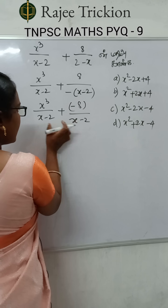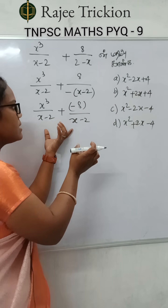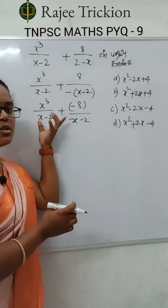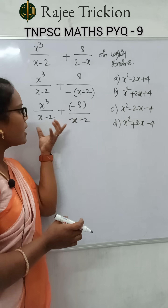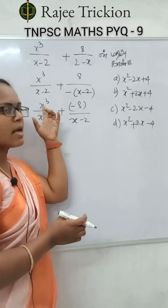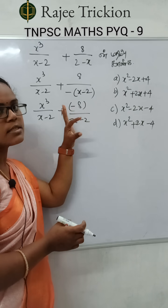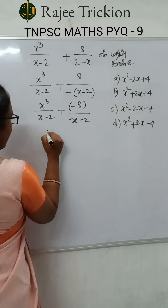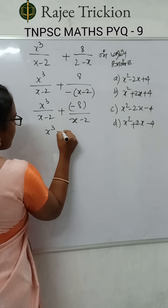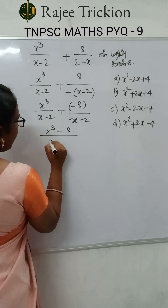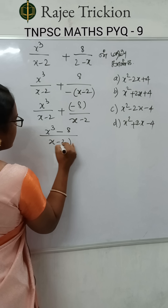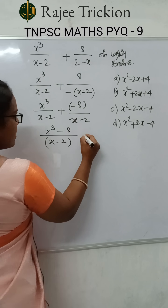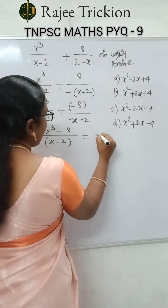Now, here in the denominator, the two are the same. So if the fractions hold the same denominator, we combine them: x³ minus 8 divided by x minus 2.